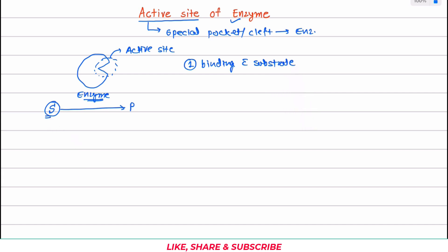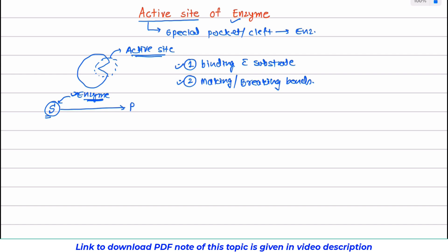Once the substrate is bound with the enzyme, then the enzyme needs to work on the substrate so that it can either make or break bonds. So the second requirement is making or breaking bonds. Both these functions are carried out at the active site only, and for that, the active site has two regions: one is the binding site and the second one is the catalytic site.